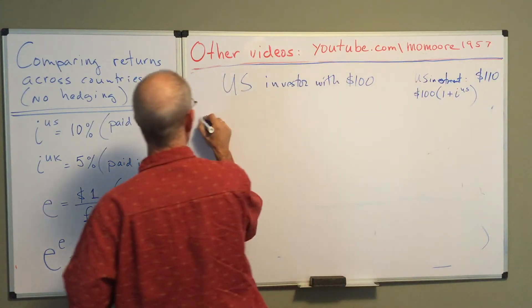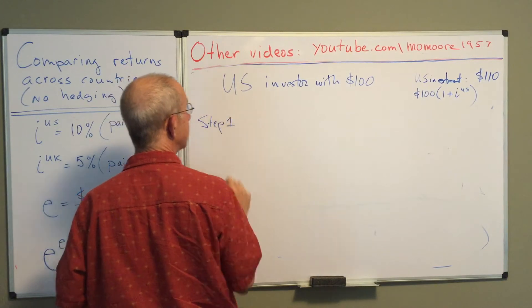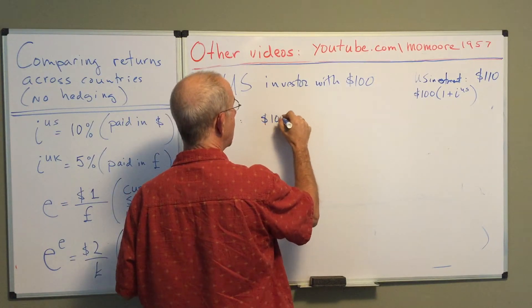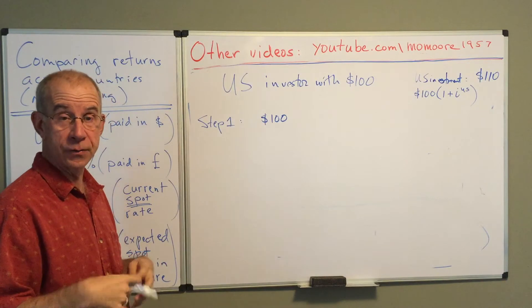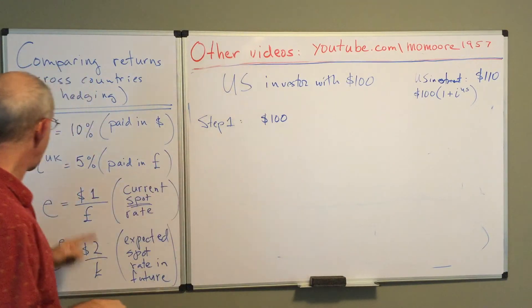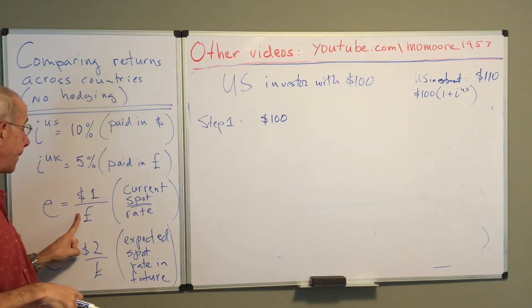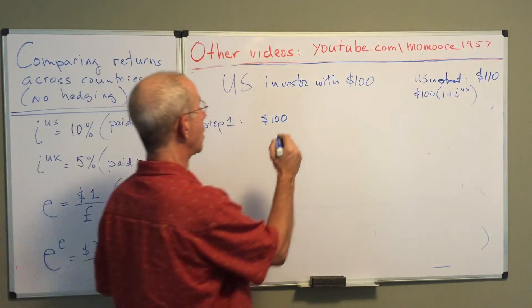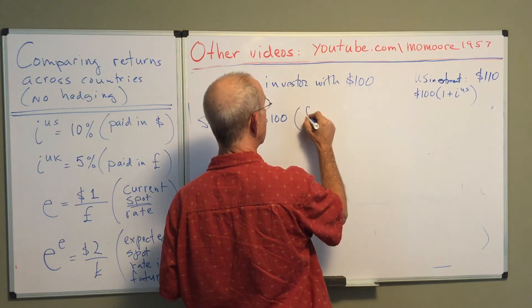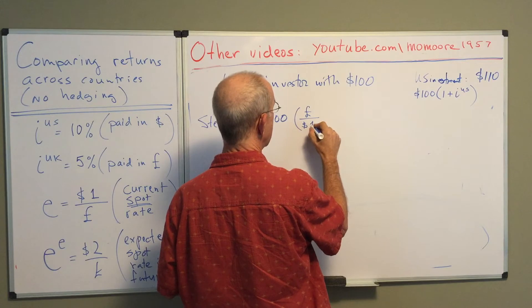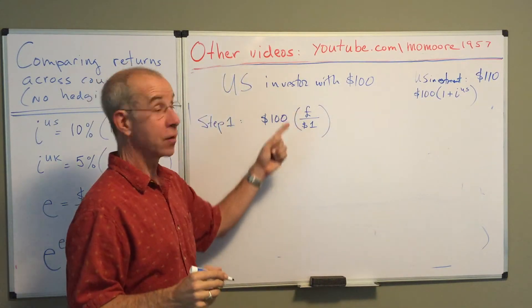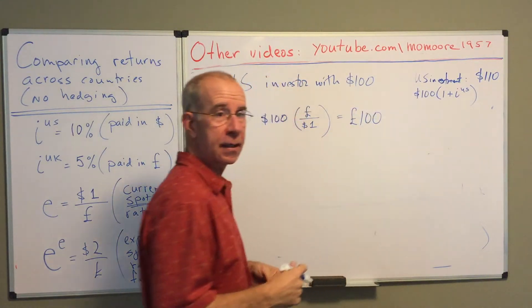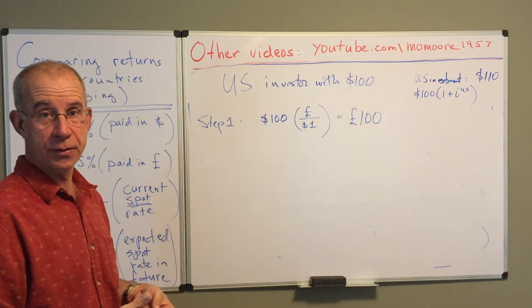Now if they are investing in the British asset, it's more complicated. They need to first take their hundred dollars and convert it into pounds using today's exchange rate. So they're going to use this exchange rate to get how many pounds they'll have available to invest in the British asset. And what they'll end up with is one hundred pounds that they can now use to invest in the British asset.